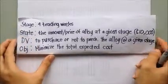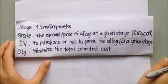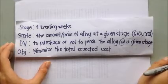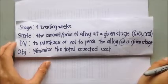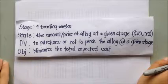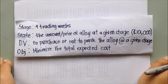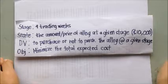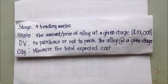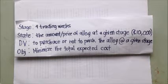Just like deterministic DP, we're going to define the stages, the state, the decision variable, and the objective in order to solve a probabilistic dynamic programming. Our stage will be 4 trading weeks. The state is the amount or price of alloy at a given stage in 10,000. The decision variable is either to purchase or not to purchase the alloy at a given stage, and the objective is to minimize the total expected cost.